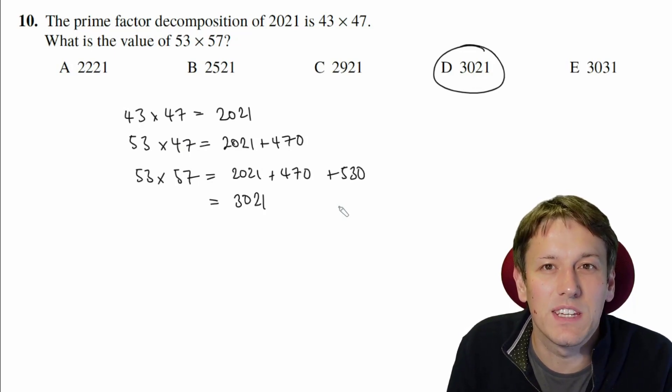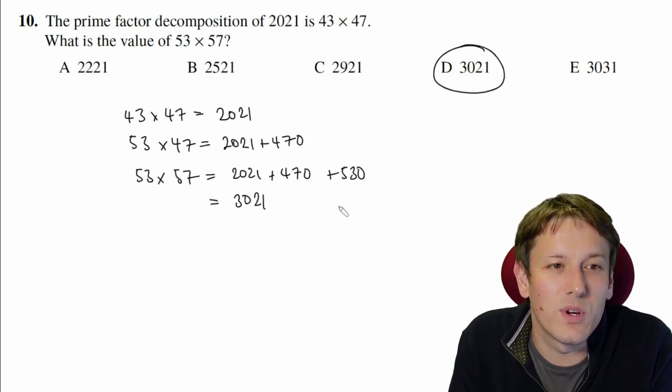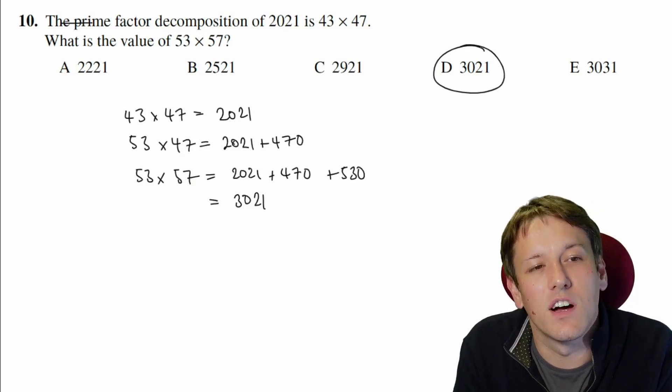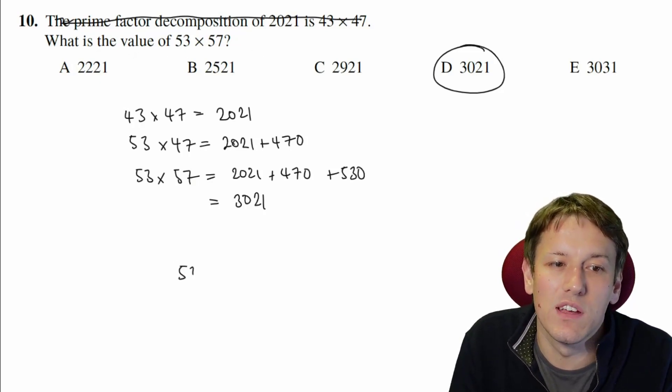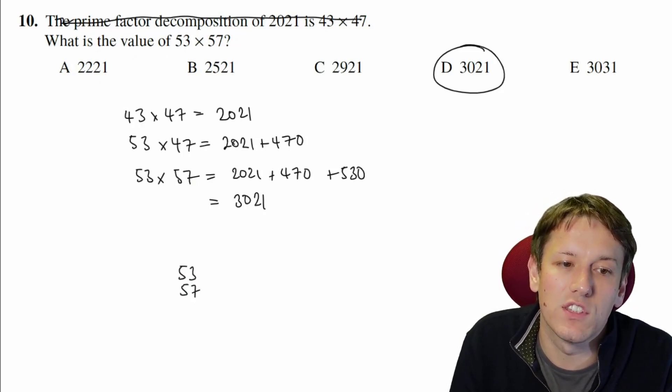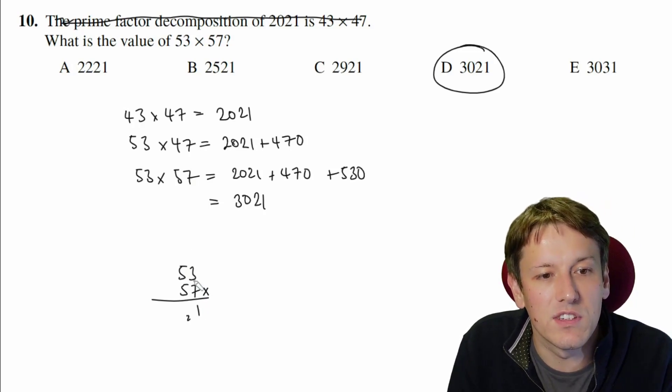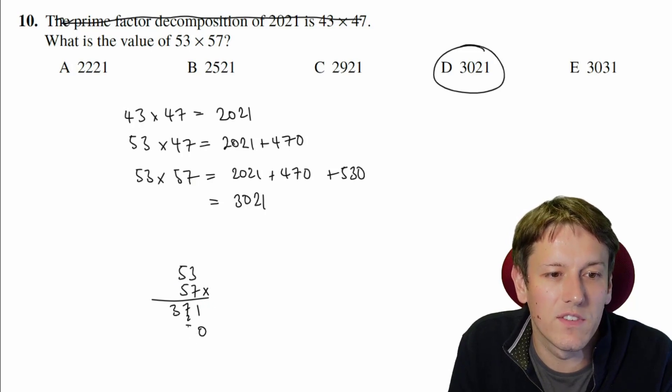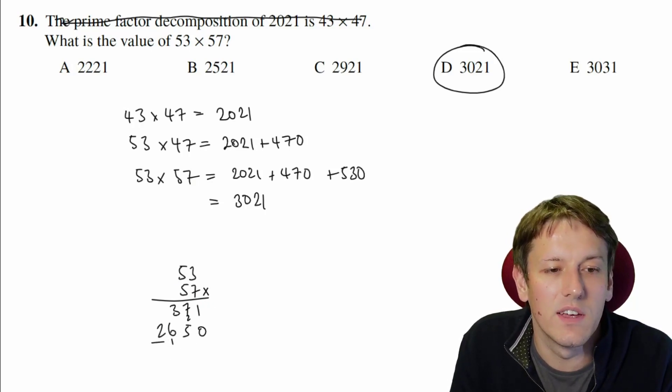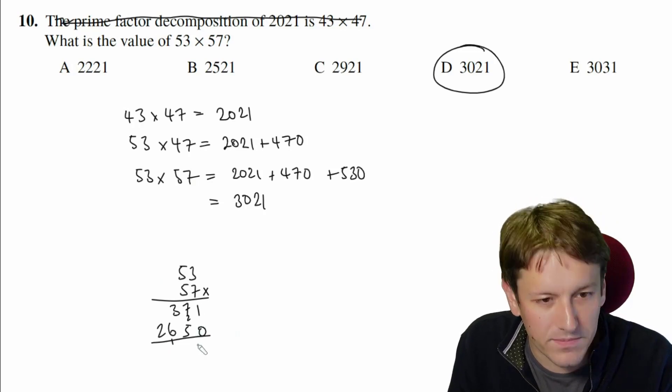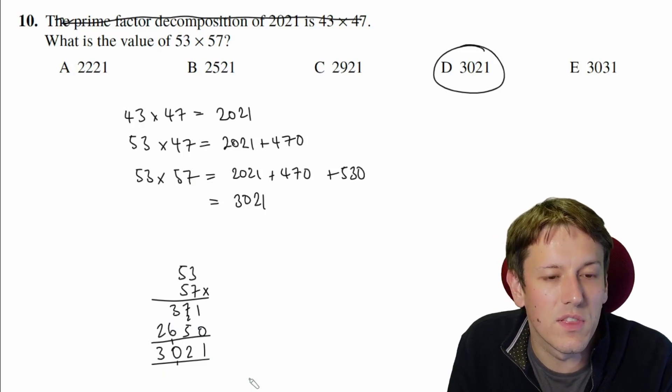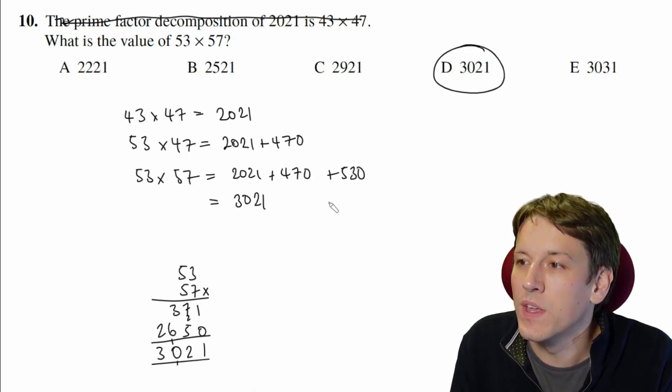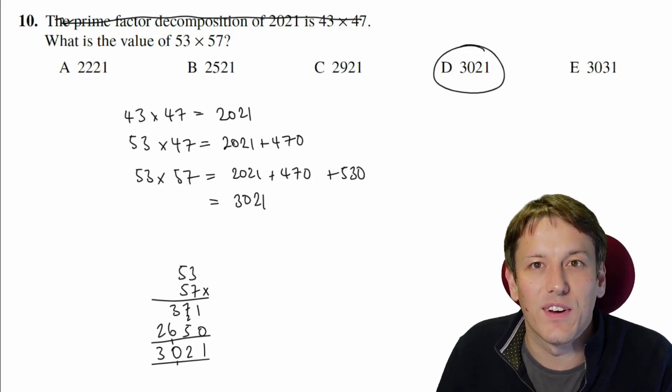Now this isn't my favourite IMC question, because for a maths challenge question here, you've got this information that you're given at the start, but we could just totally disregard it, and I think it might even be quicker to do the question if we do, if we just work out 53 times 57. If you can do a long multiplication pretty quickly here, 7 times 3 is 21, 7 times 5 is 35, plus 2 gives me 37, put a 0 here, 5 times 3 is 15, 5 times 5 is 25, so add the 1 to give us 26, and then if I just add these together, I get 1, and then 12, and then 10, and then that gives me a 3, so I get 3,021. So actually, just doing the multiplication is a very good option here.